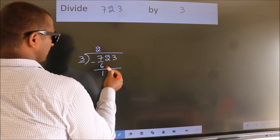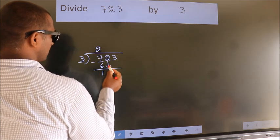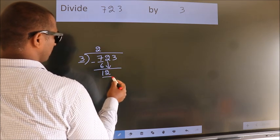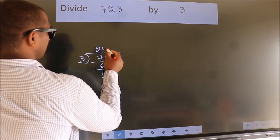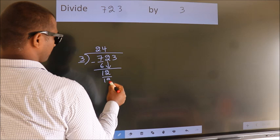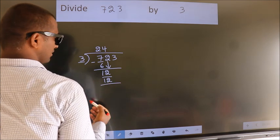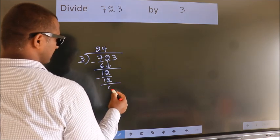After this, bring down the beside number. So, 2 down. So, 12. When do we get 12? In 3 table. 3 fours, 12. Now, we subtract. We get 0.